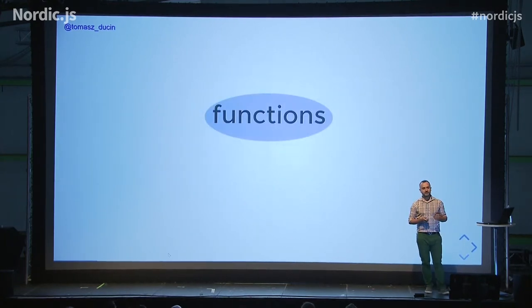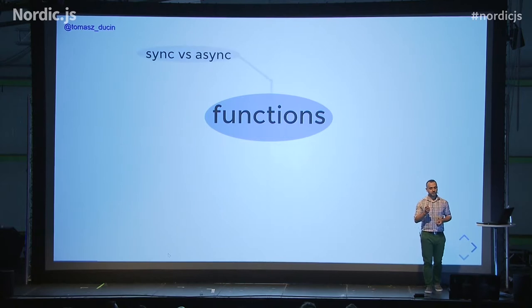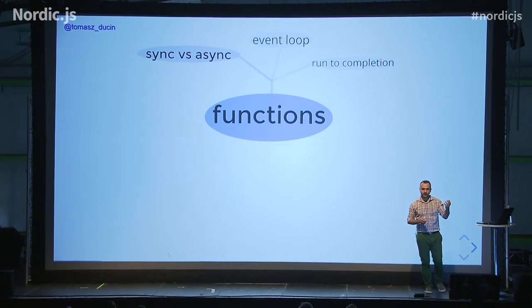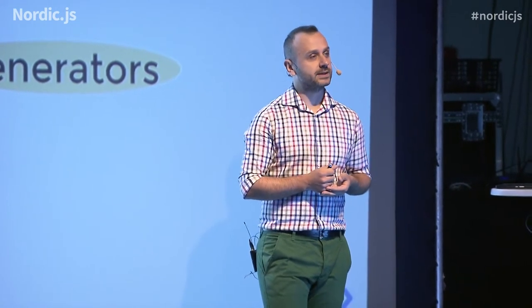What we're going to start with today is recalling the fundamental piece of the language, and that is functions. We're going to concentrate on synchronous invocation and asynchronous invocation of functions. We'll also mention the mechanics of event loop and the run-to-completion rule. Having this said, we have the foundation of the first way we can use asynchronous programming, and that is callbacks. Next, we will proceed to a promise — a representation of an operation that will be finished in the future.